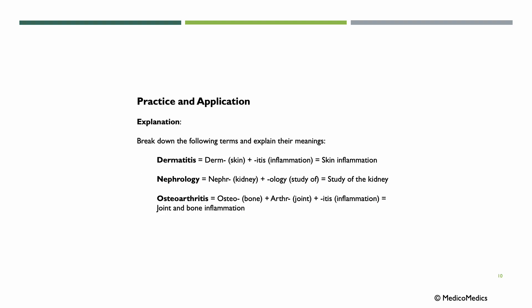Let's do a brief practice and application run. Break down the following terms and explain their meanings. Dermatitis: derm means skin, itis means inflammation, so this is dermatitis — inflammation of the skin. Nephrology: nephro means kidney, logi means the study of, adding the vowel gives us nephrology — study of the kidney. Osteoarthritis: osteo means bone, arthro means joint, itis means inflammation — putting them together, we have osteoarthritis, inflammation of joints and bone.